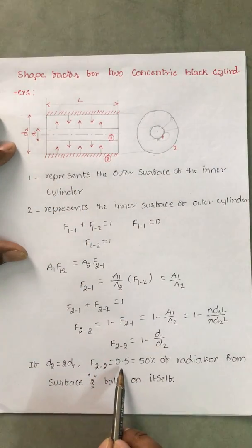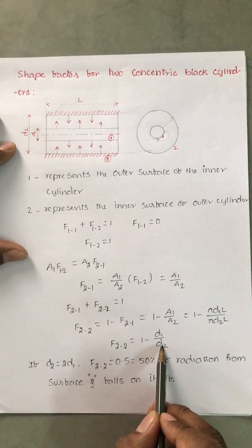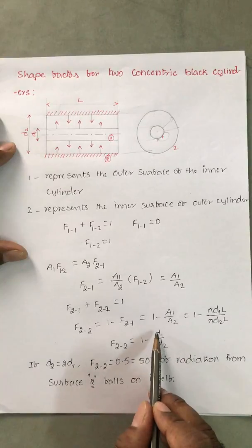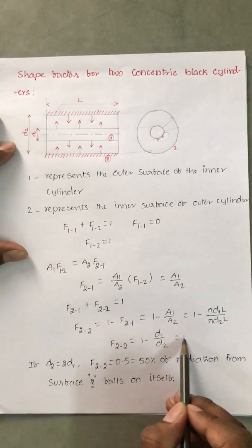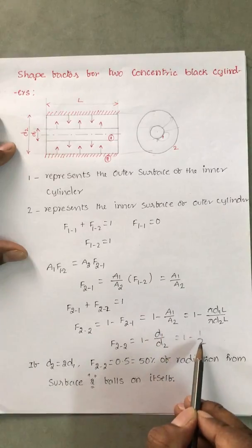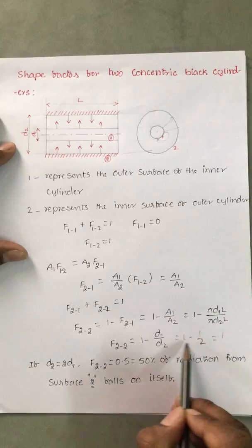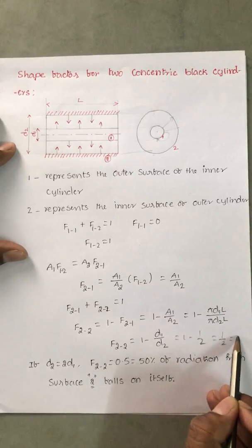Then F₂₂ becomes 50%. That means if D₂ is equal to 2D₁, D₁ over 2D₁, D₁ cancels to 1 by 2. It becomes 1 minus 1 by 2. 2 minus 1 is 1, and the denominator is 2, so 0.5.